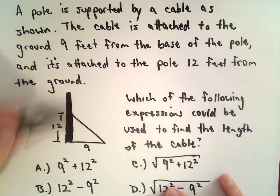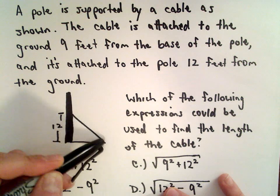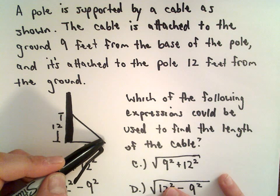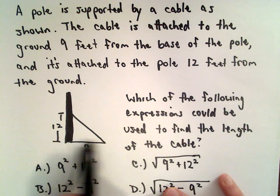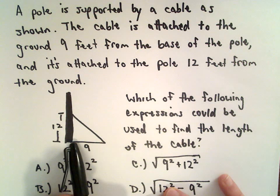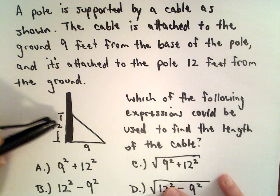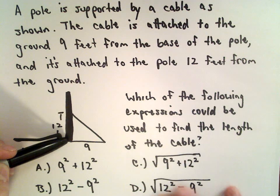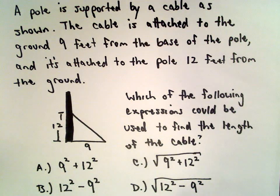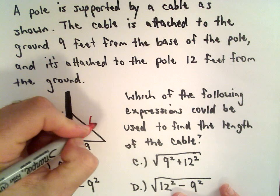A pole is supported by a cable, as shown in the little diagram here. The cable is attached to the ground 9 feet from the base of the pole, and it's attached to the pole 12 feet from the ground. We want to know which of the following expressions can be used to find the length of the cable, and maybe I'll just abbreviate that as L for length.